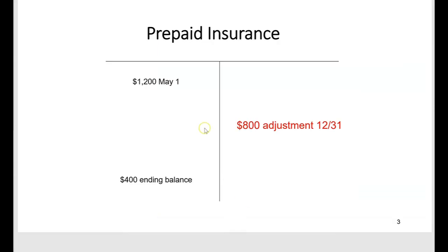Looking at the T-account, $1,200 was the beginning balance of prepaid insurance. By year-end, after crediting prepaid insurance $800, the ending balance is only $400. This $400 ending balance represents what was paid this year and will be incurred as an expense next year. That's why cash basis expense was $1,200 but accrual basis expense is only $800 — the $400 ending balance was paid this year but incurred next year.